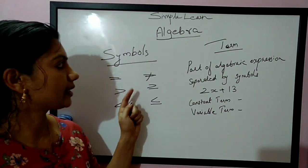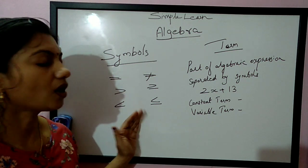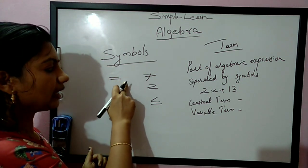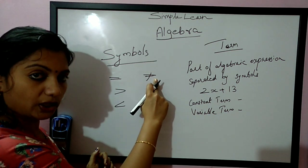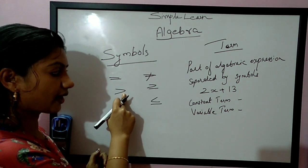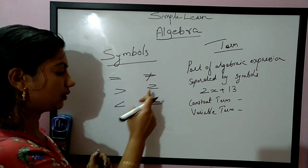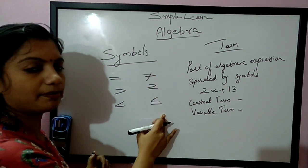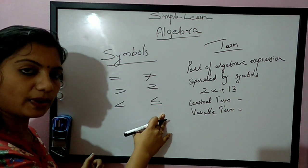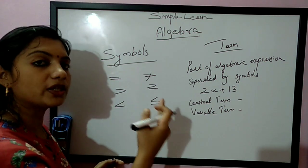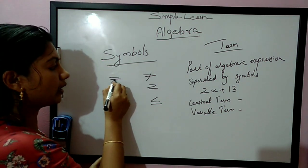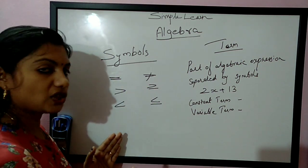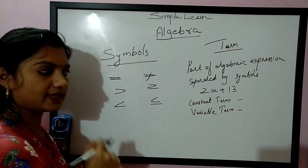Now let's look at the symbols used in algebraic expressions and statements: equal, not equal, greater than, greater than or equal, less than, and less than or equal. With these symbols we write algebraic expressions or algebraic statements. Statements use the equal or not equal symbol, while expressions and statements both use these symbols.